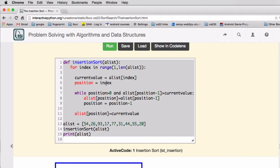It's setting up the position to the place we're going to start from. And then while the position is greater than zero and the value at position minus one is greater than the current value, we're going to move things over.